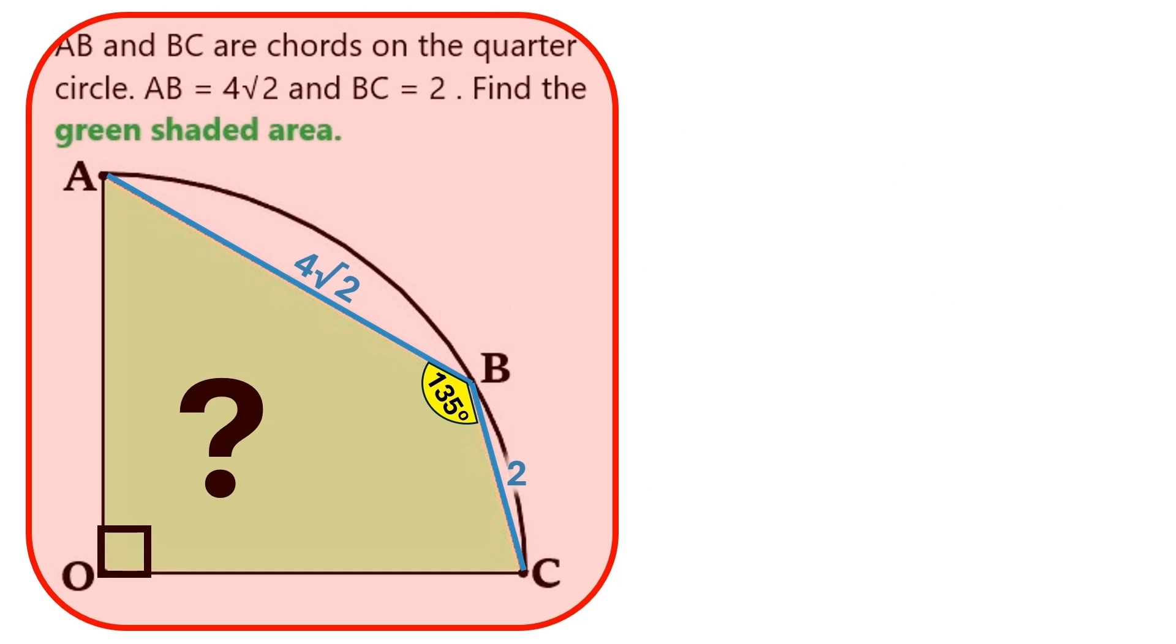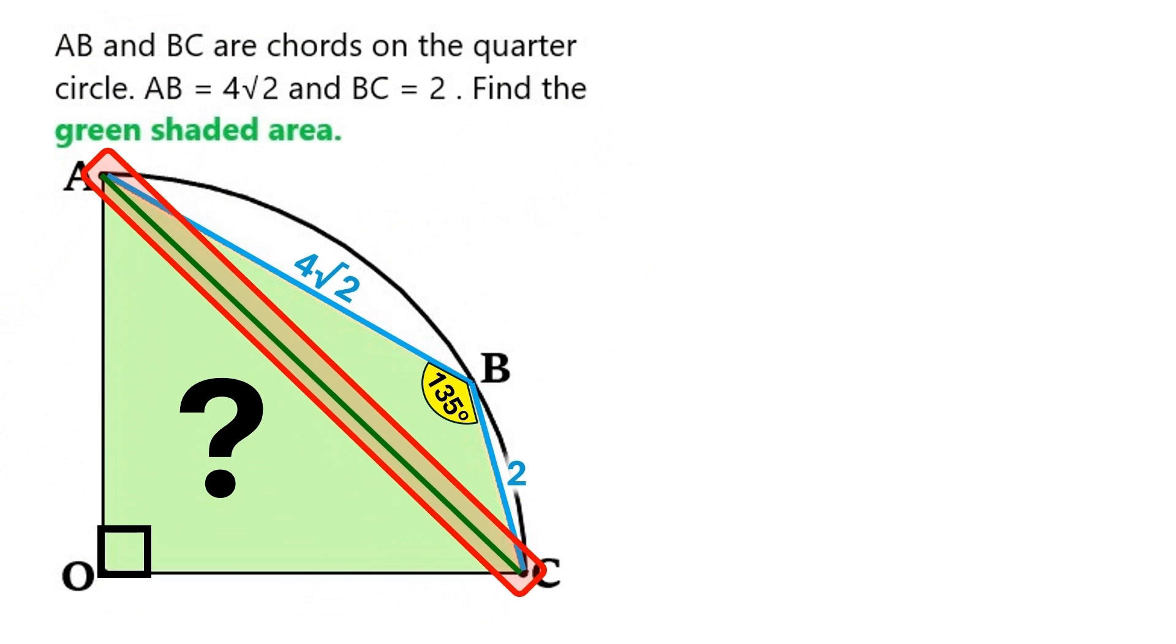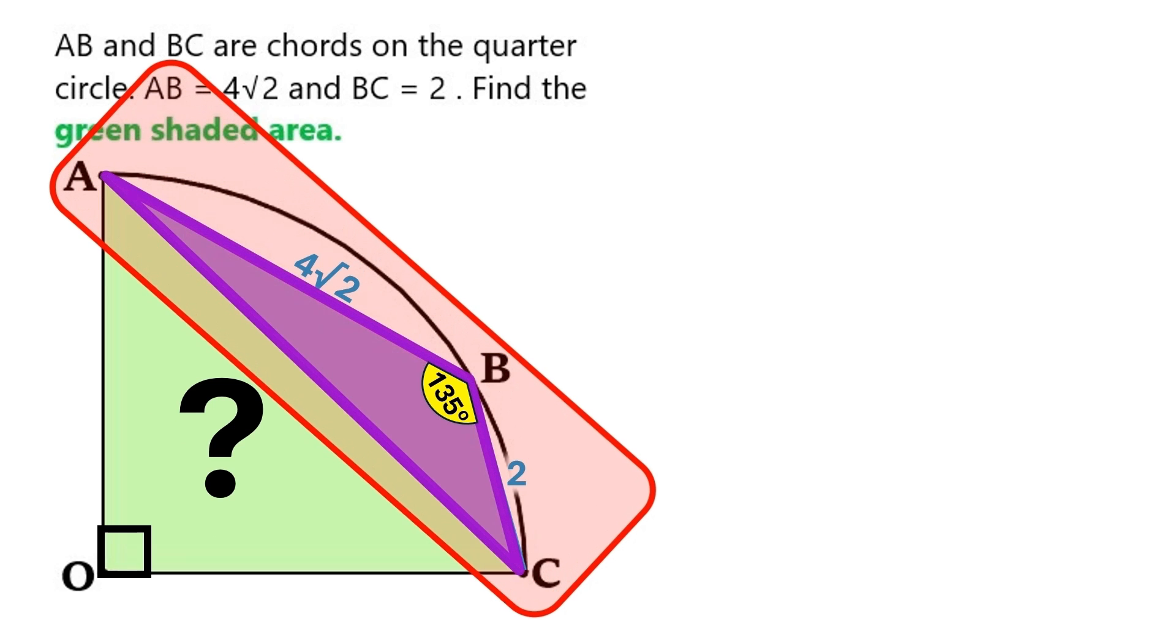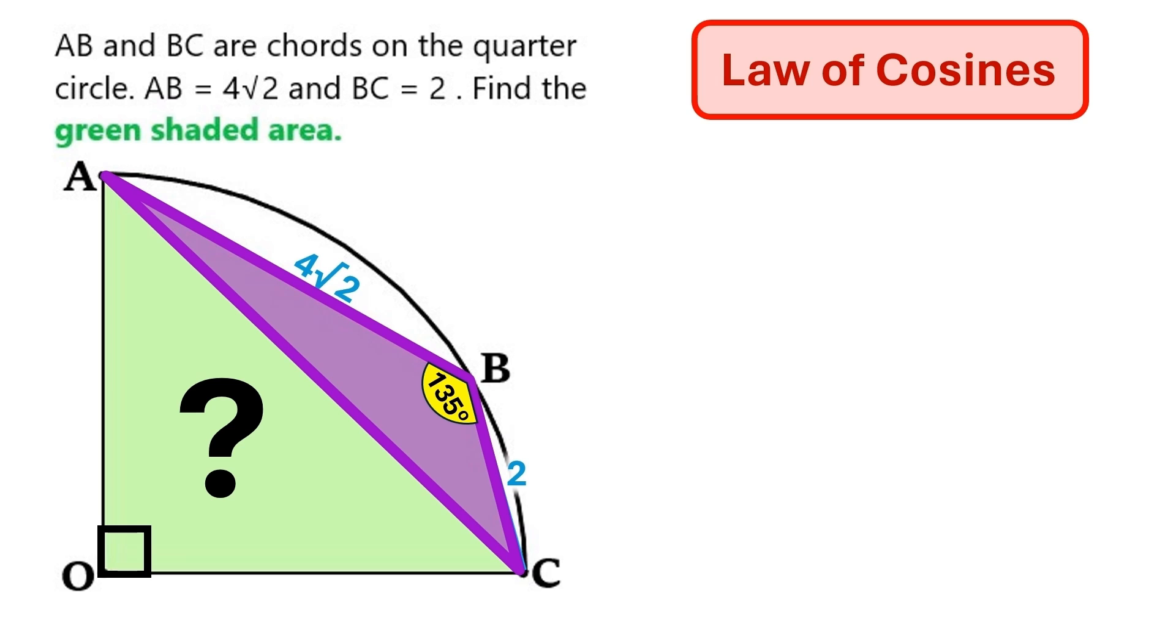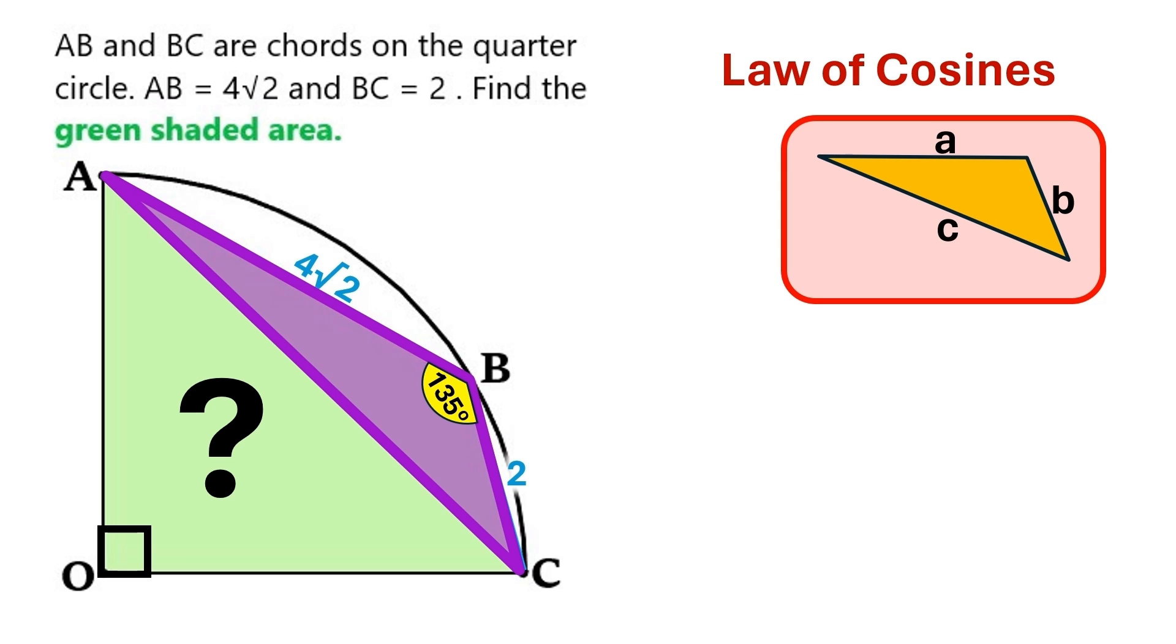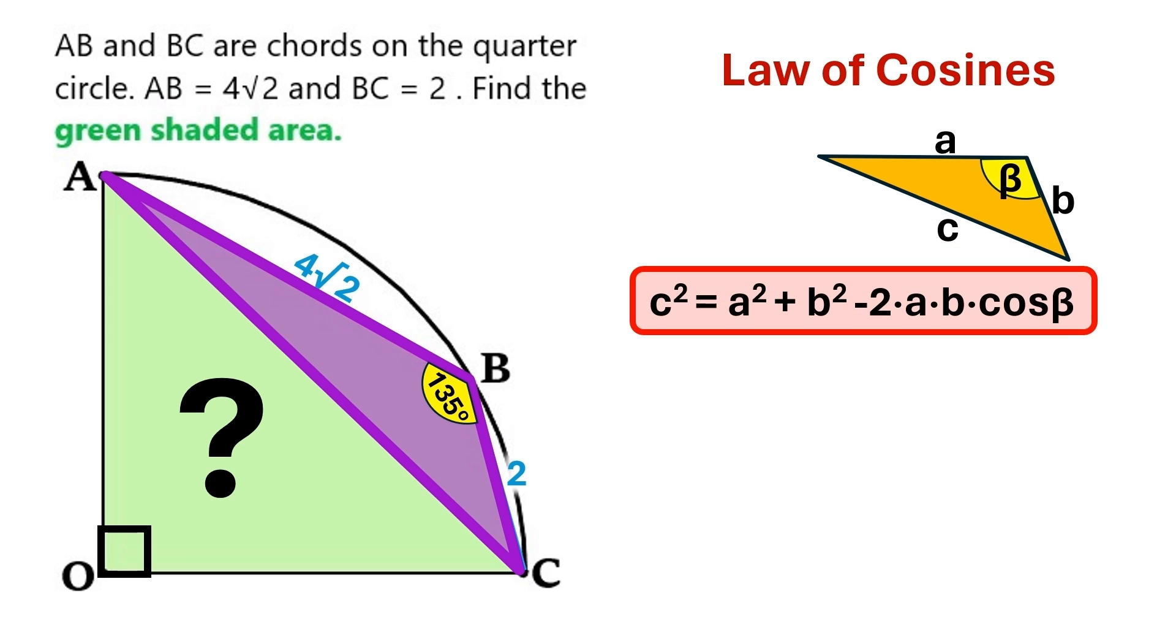We'll draw this green line here to create this purple triangle. We've got this property called the law of cosines, which states that if we have a triangle such as this, with this angle beta over here, we can use this equation to find the missing side length.